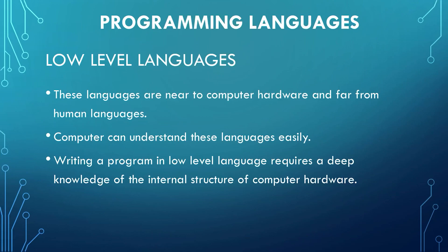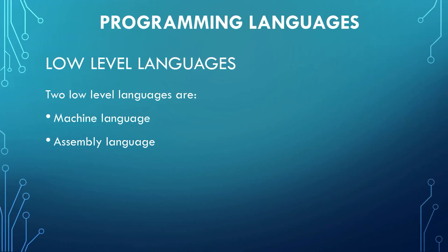Low-level languages are basically near to computer hardware. When I say these are near to computer hardware, it means that, for example, we have binary. Binary language consists of only zeros and ones. It would be difficult for humans to understand that language. Computers, on the other hand, can easily understand binary language. These are near to the computer and if one wants to write a program using a low-level language, that person must have complete in-depth knowledge of computer hardware. We have two low-level languages: machine language and assembly language.